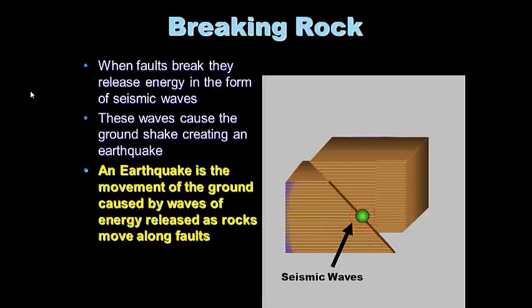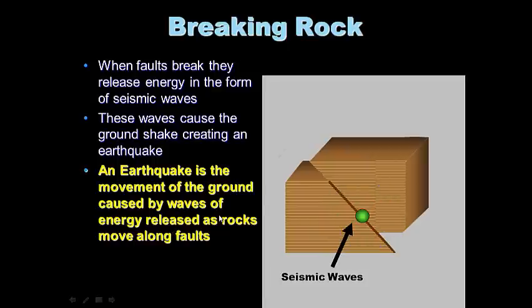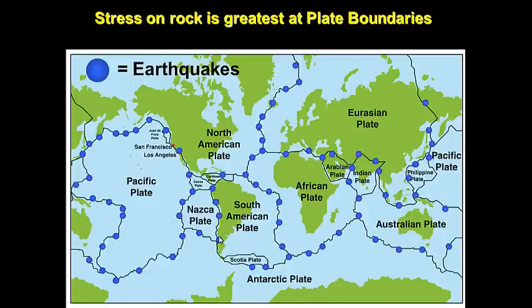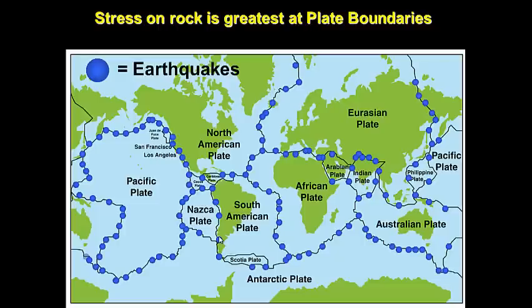Those waves move outward in all directions, like a pebble thrown in a pond. Stress on rock is greatest at plate boundaries, which is where earthquakes happen — rocks break along faults at plate boundaries. That's actually how we discovered plates: we started plotting earthquakes and realized they don't occur randomly but happen at these localized plate boundaries.